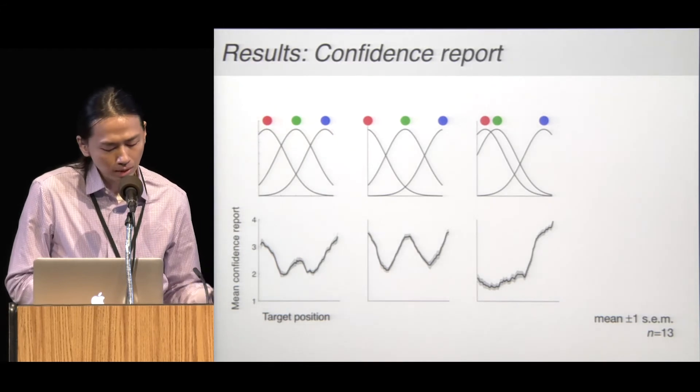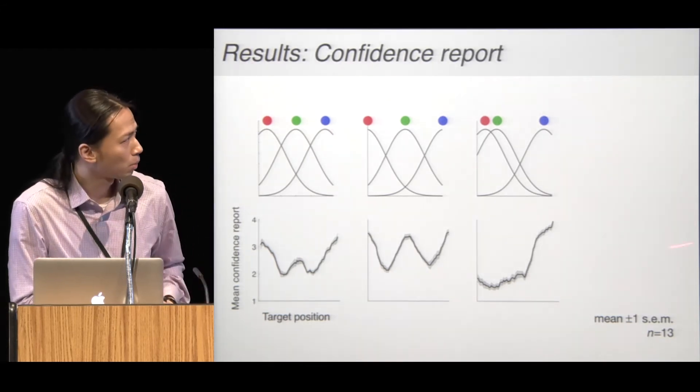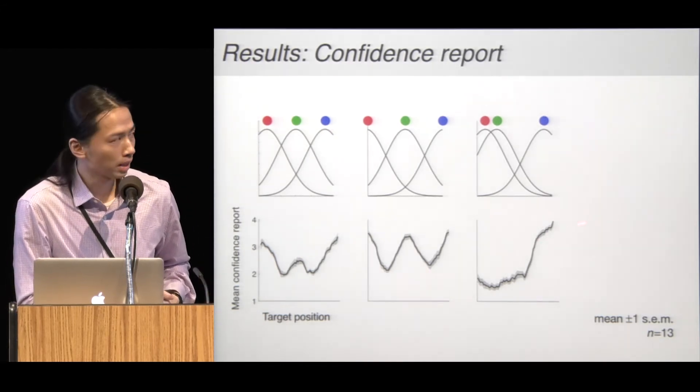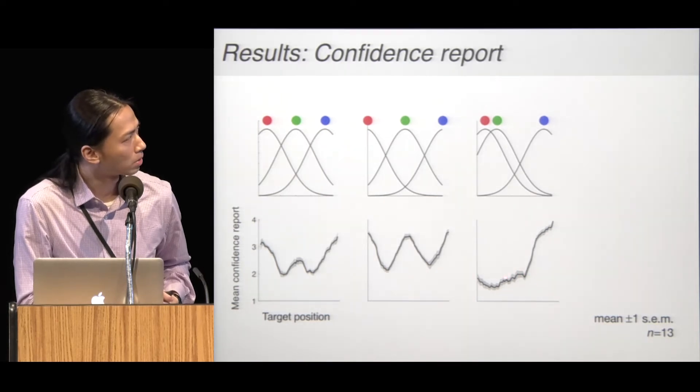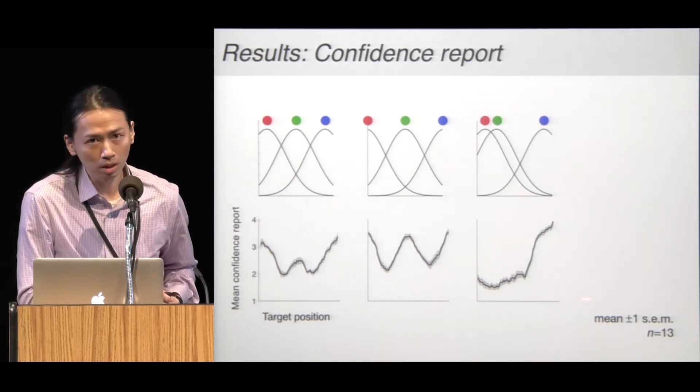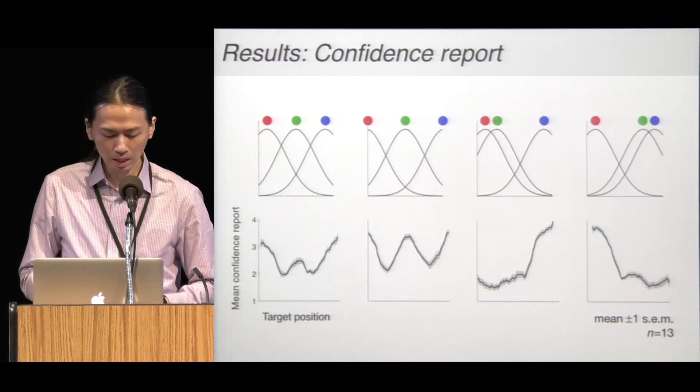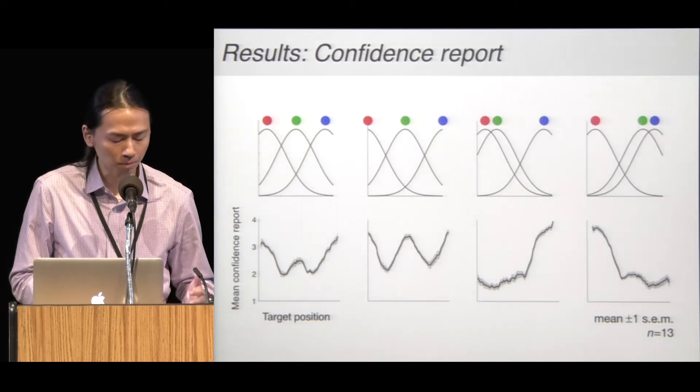When the middle distribution is close to the left, confidence report is high at the right and then it goes down. It maintains quite low until the center of the left distribution. The fourth condition is just a flipped version of the third one.